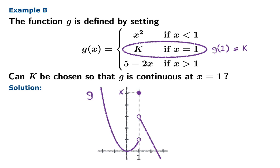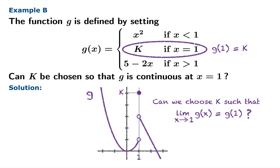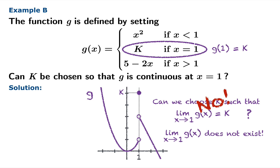Choosing k is like choosing where that dot sits along the vertical line x equals 1. Can we choose k so that the limit as x approaches 1 of g of x equals g of 1, which is k? The answer is no, because the limit as x approaches 1 of g of x does not exist. So choosing k is irrelevant — there's no way to get this function to be continuous at 1.